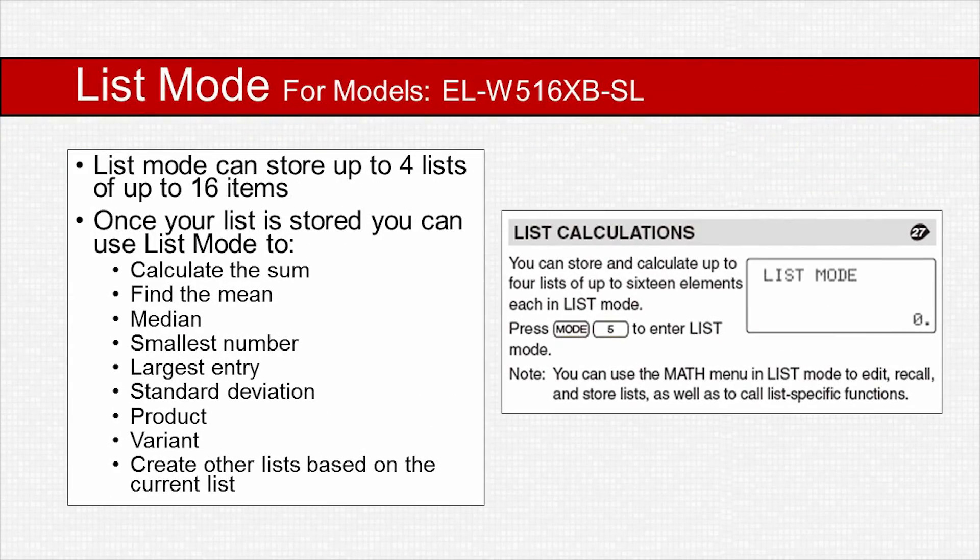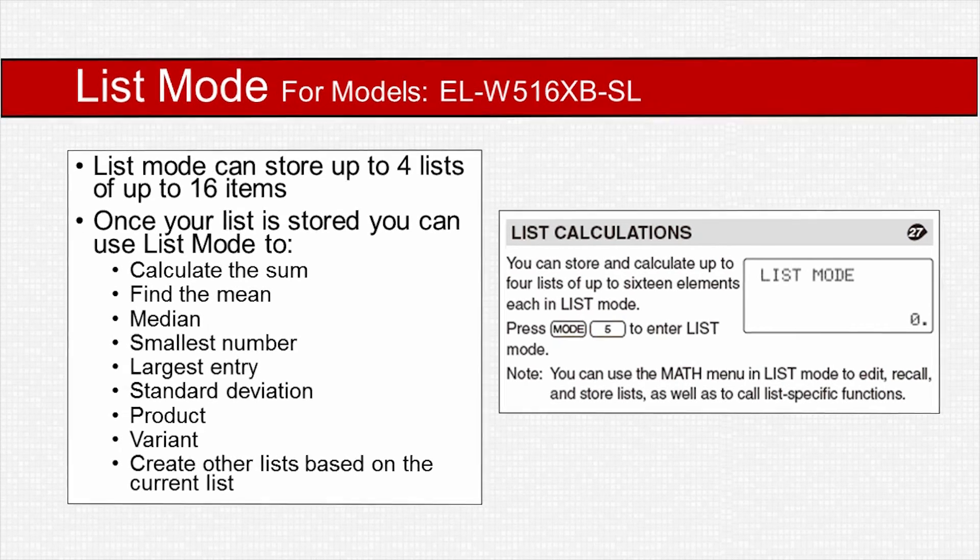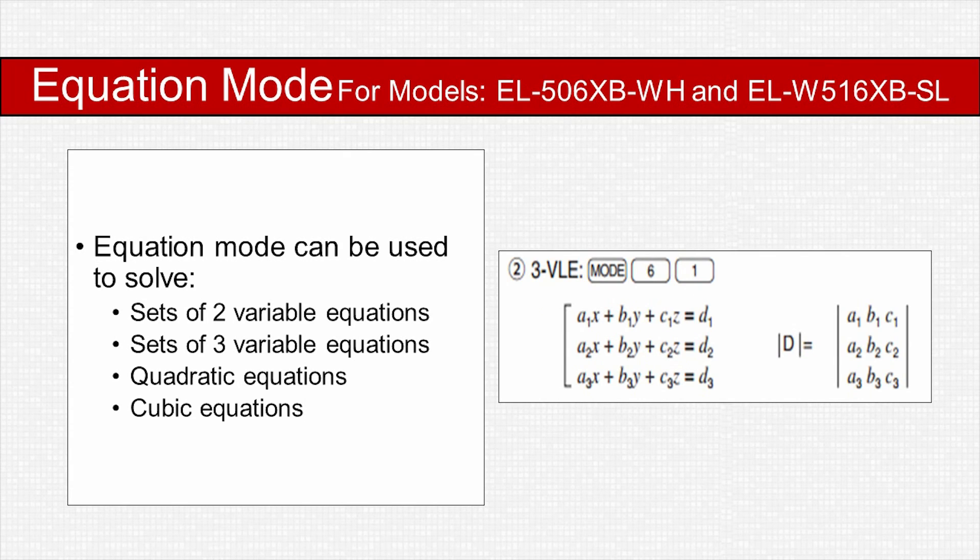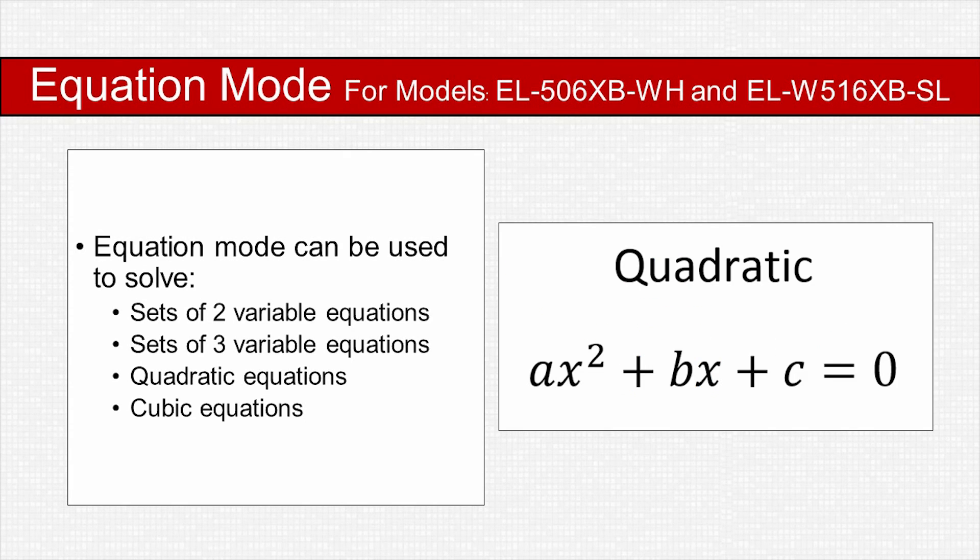List mode allows you to store up to four lists of up to sixteen items. You can use list mode to do many calculations such as mean, sum, mode, range, or create sub-lists. Equation mode can be used to solve different sets of equations such as two-variable, three-variable, quadratic, and cubic.